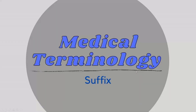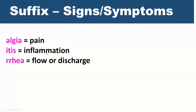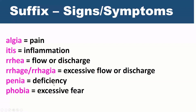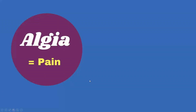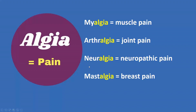Next, our suffixes. A suffix is the end of the word after the root. Examples of suffixes that are signs and symptoms: algea refers to pain — myalgia is muscle pain, arthralgia is joint pain, neuralgia is neuropathic pain, mastalgia is breast pain.